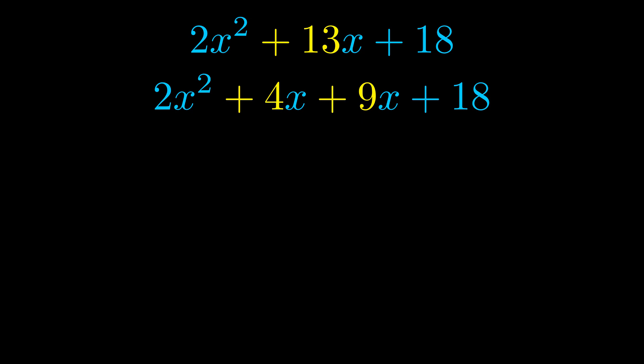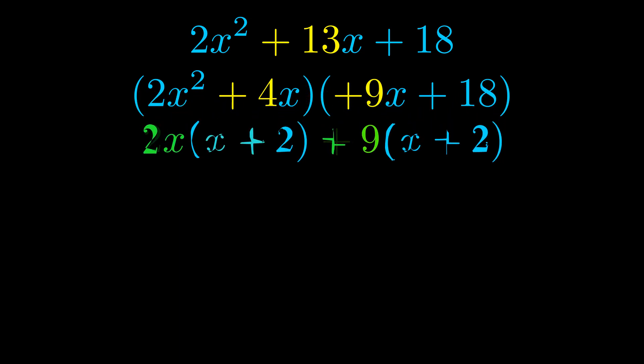Once we've done this we go ahead and we put parentheses around the first term and the last term and we do that so that we can take the greatest common factor out of both terms. We can see the greatest common factor is now outside in green.